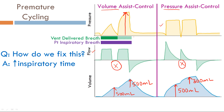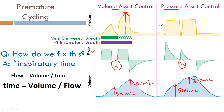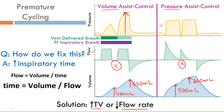In volume assist control, the cycle variable is volume, so time is not a direct variable. Using the equation flow equals volume over time, rearranged as time equals volume over flow: to increase inspiratory time in volume assist control, you either increase your tidal volume or decrease your flow rate. In pressure assist control, the cycle variable is time, so you can simply increase the inspiratory time directly. This is how you address premature cycling — increase inspiratory time and manipulate the appropriate variables depending on the mode.